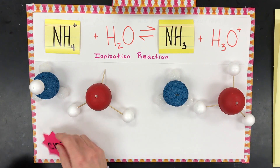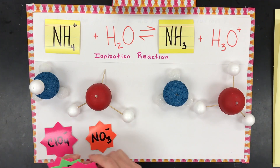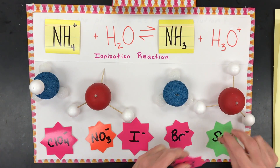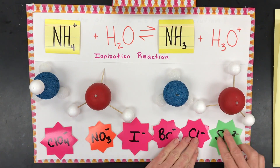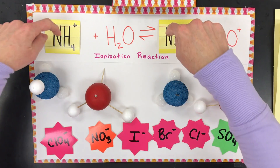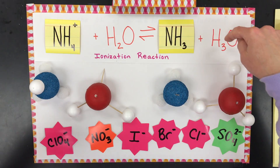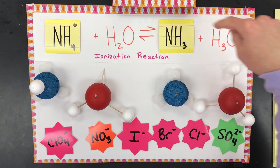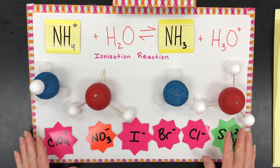Remember, there's a list of ions that the ammonium could be bonded to at the very start that do not change the pH. So it's only the ammonium ion turning into ammonia and hydronium.